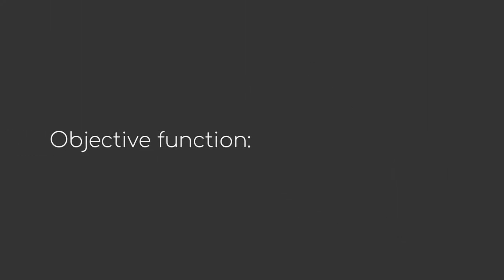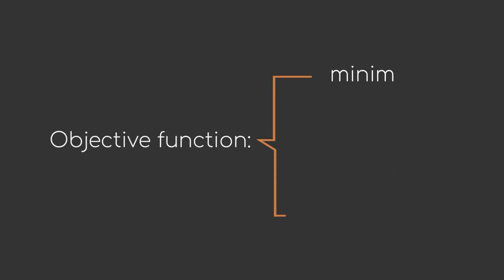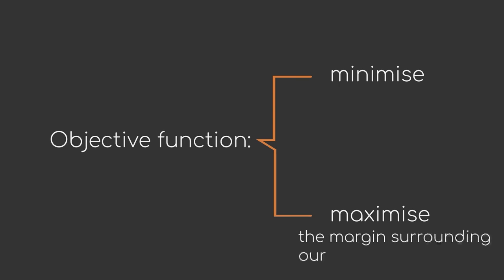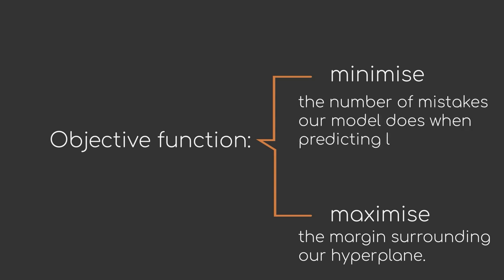The objective function can be used in scenarios where we want to minimize or maximize a given function. In the case of an SVM, we are trying to maximize the margin surrounding our hyperplane and to minimize the number of mistakes our model does when predicting labels.